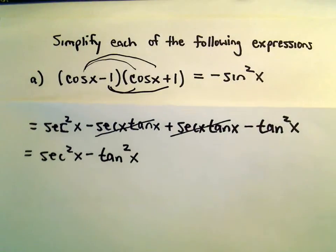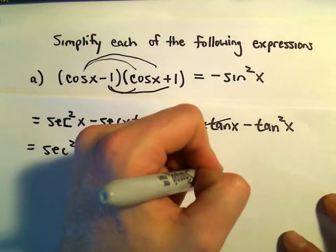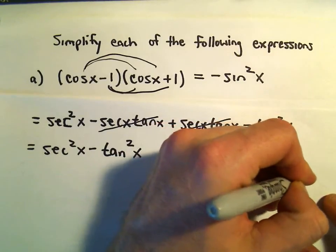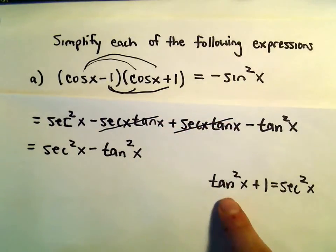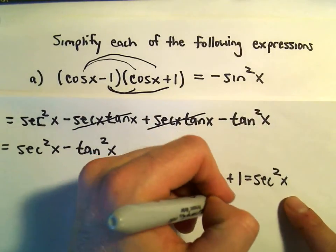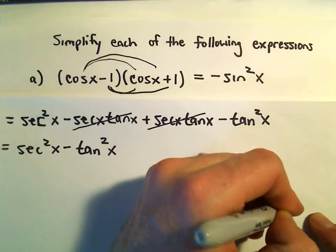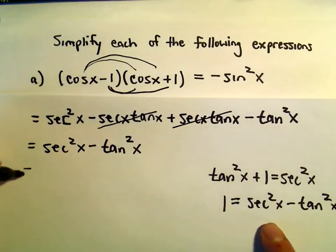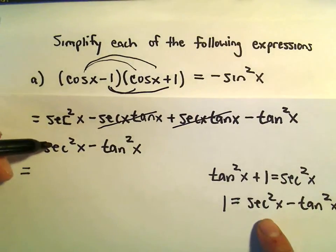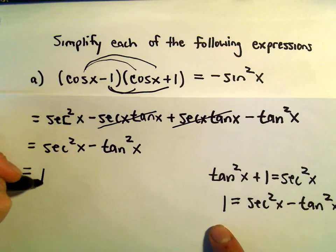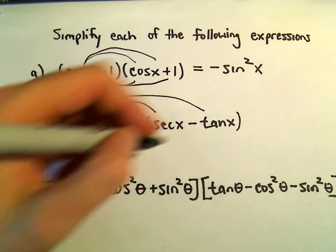There's an identity relating secant squared and tangent squared. Tangent squared x plus 1 equals secant squared x. If we subtract tangent squared from both sides, we get 1 equals secant squared x minus tangent squared x. By manipulating that known identity, we can see that secant squared minus tangent squared simply equals 1.